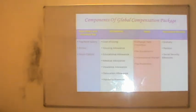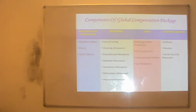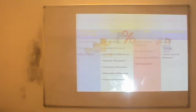What are the components of a global compensation package? There are four heads: base salary and incentive pay, allowances, taxes, and retirement benefits. Let us discuss each one separately.